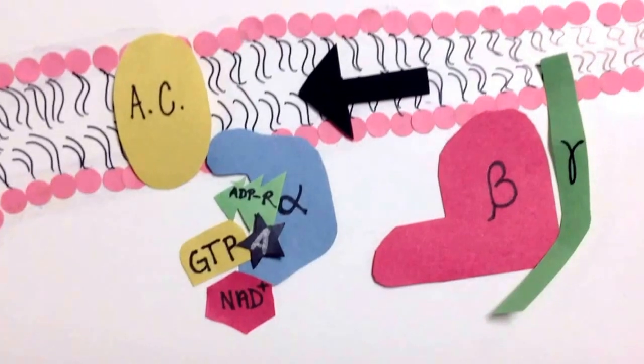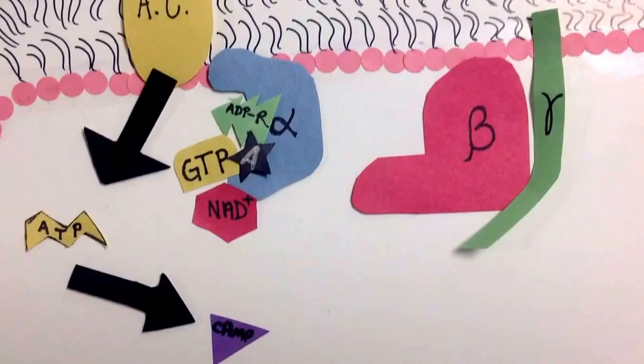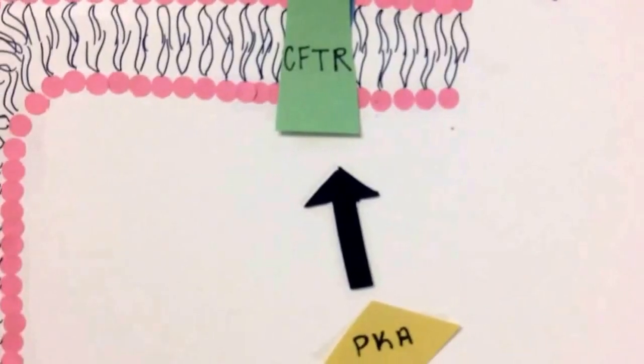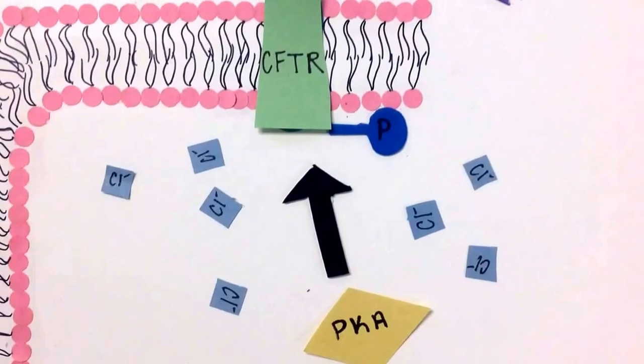Adenylate cyclase converts ATP to cyclic AMP and pyrophosphate. The production of cyclic AMP activates protein kinase A, which then phosphorylates the cystic fibrosis transmembrane regulator, otherwise known as CFTR, leading to chloride ion secretion.